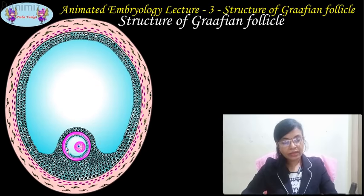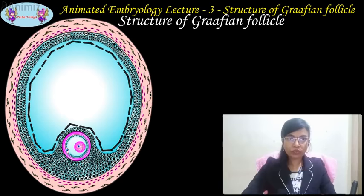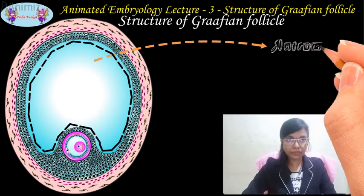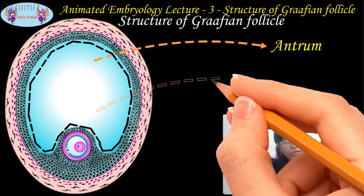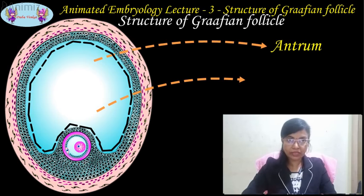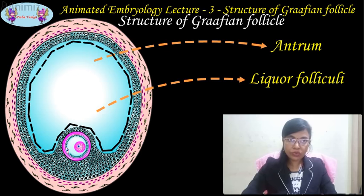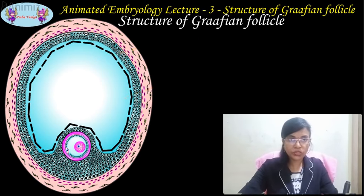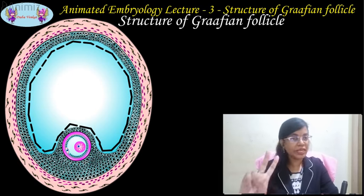In a Graafian follicle, we can see a very large fluid-filled space as shown in the picture; it is called the antrum. The antrum is filled with fluid secreted by the follicular cells, called liquor folliculi. Increasing the amount of liquor folliculi increases the size of the antrum, which pushes the Graafian follicle to project over the surface of the ovary. The antrum also divides the stratum granulosum into two layers.